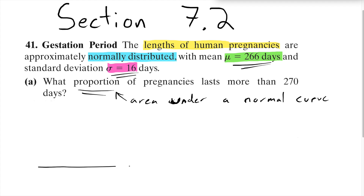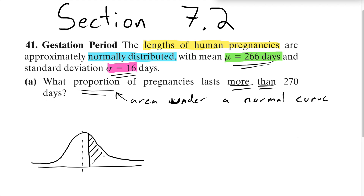It's a really good idea to draw pictures. We're looking for more than 270 days. The mean is 266, so 270 is a bit above the mean, and because we're looking for more than, we want the area to the right. That area is the answer to part A. We need to use our normal CDF function.